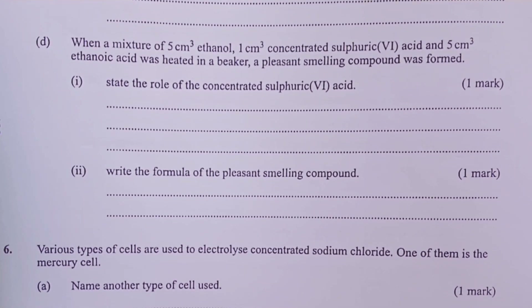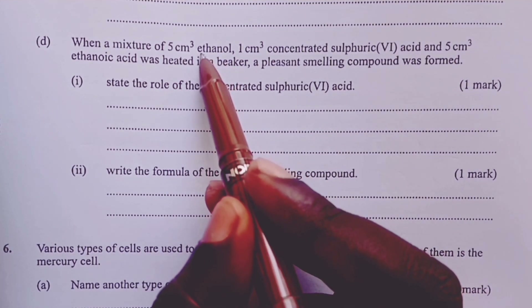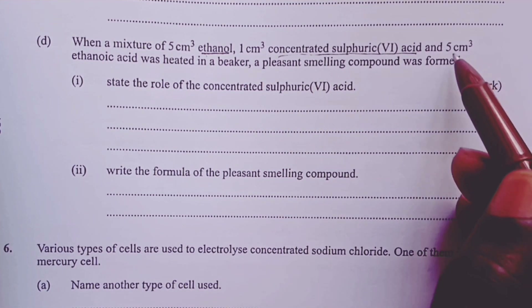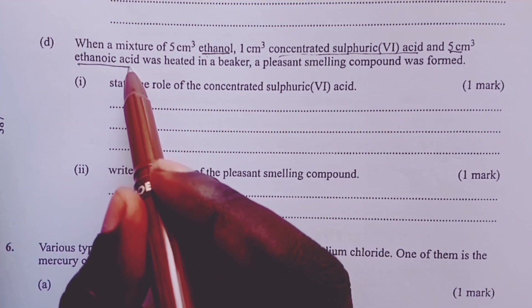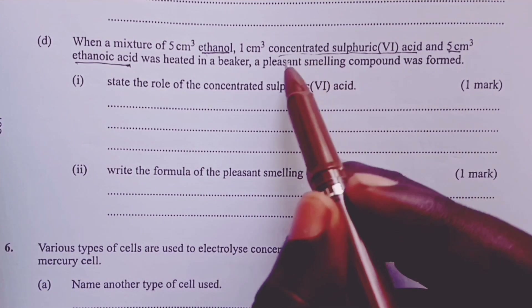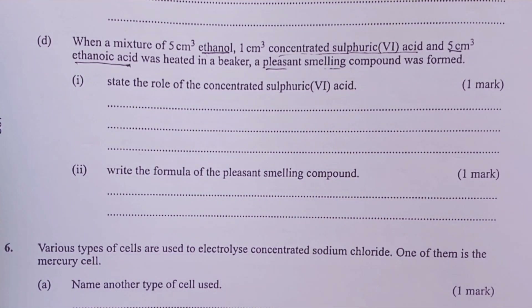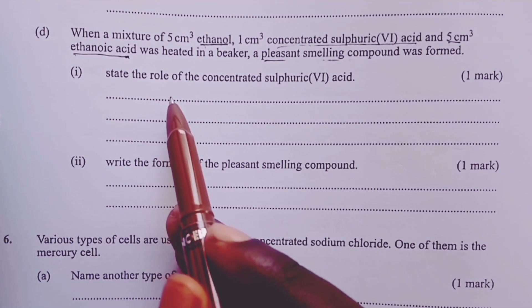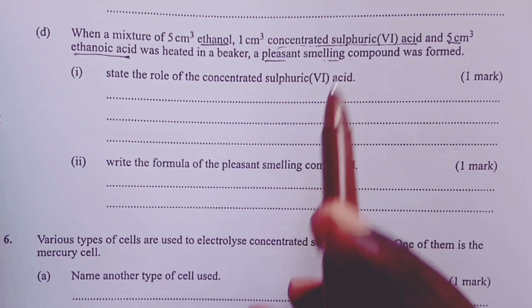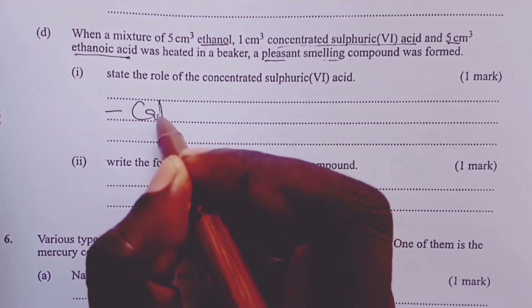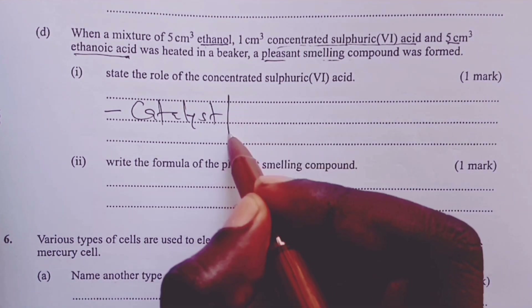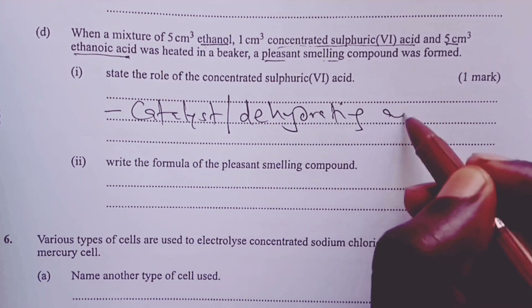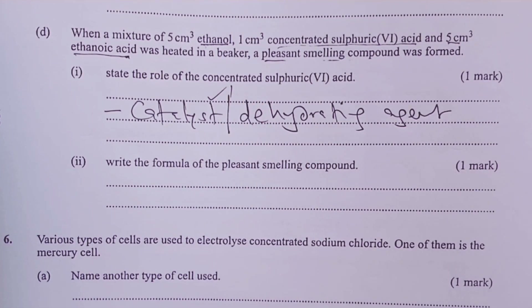Part D: when a mixture of 5 cm³ of ethanol (an alkanol), 1 cm³ of concentrated sulfuric acid, and an equal volume of ethanoic acid (an alkanoic acid) was heated, a pleasant smelling compound was formed — obviously an ester. The process is esterification. Concentrated sulfuric acid acts as a catalyst, or alternatively as a dehydrating agent — either answer earns one mark.